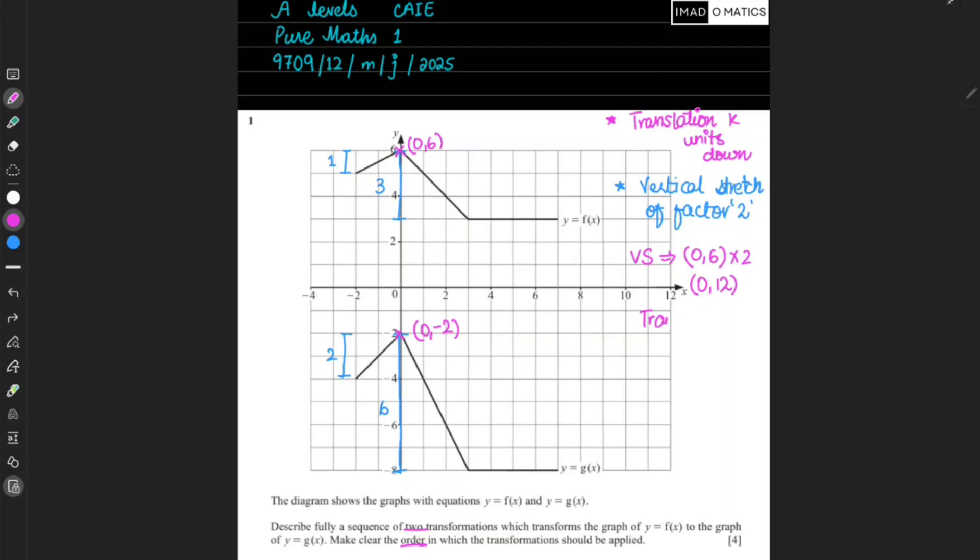Translation has happened, then this has become zero comma minus two. So how many units has it moved downward to get minus two?